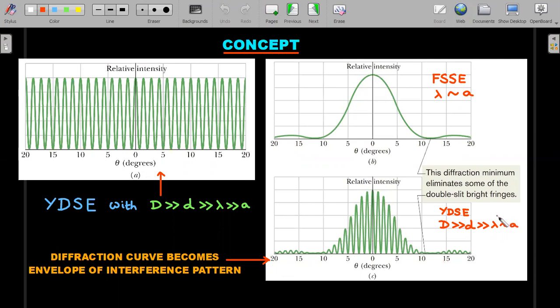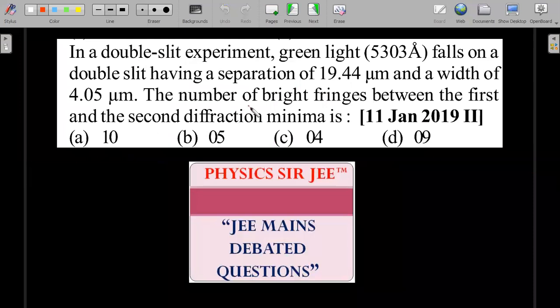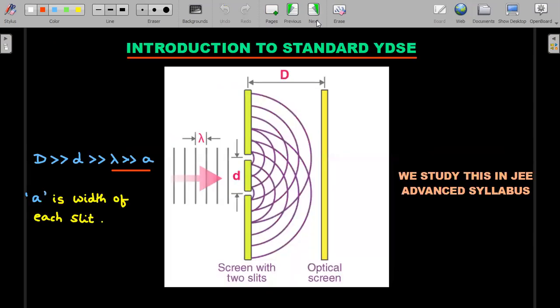So that is the YDSE with this relaxed condition. Now the question, if you go back and see, is asking us to count the number of the minima or maxima, or I should say number of brighter fringes, within the first minima and the second minima. First minima occurs somewhere here and the second minima will occur somewhere here. In that, how many of these small maximas are there? That is what he's asking. So if we go back to the wording, the number of bright fringes between the first and the second diffraction minima is what he's requesting us to calculate.